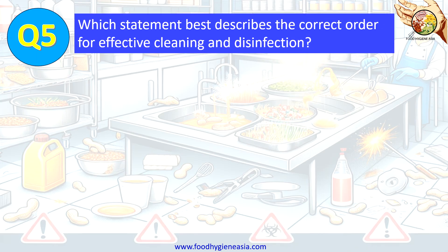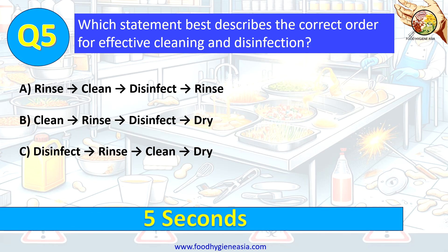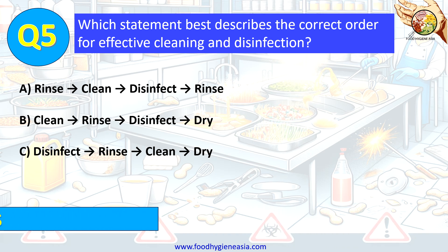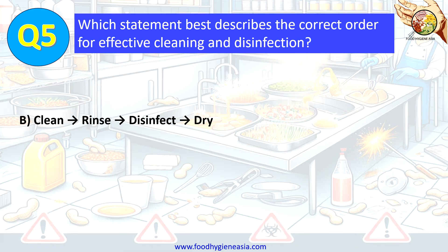Question 5. Which statement best describes the correct order for effective cleaning and disinfection? A. Rinse, clean, disinfect, rinse. B. Clean, rinse, disinfect, dry. C. Disinfect, rinse, clean, dry. The correct answer is B. Clean, rinse, disinfect, dry.